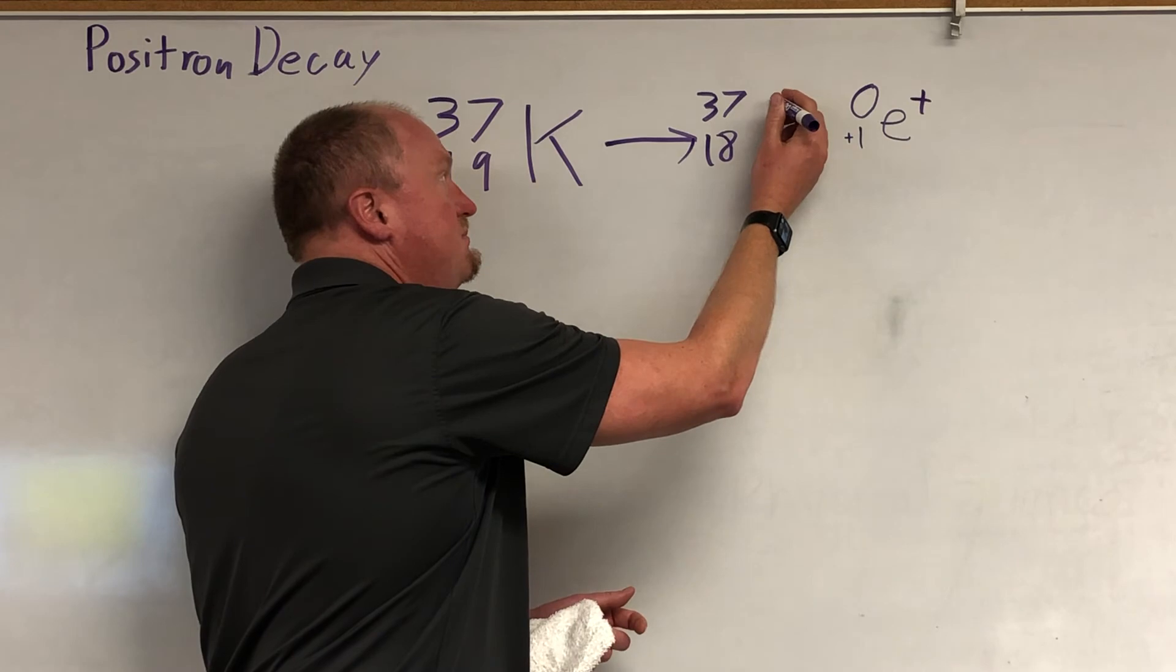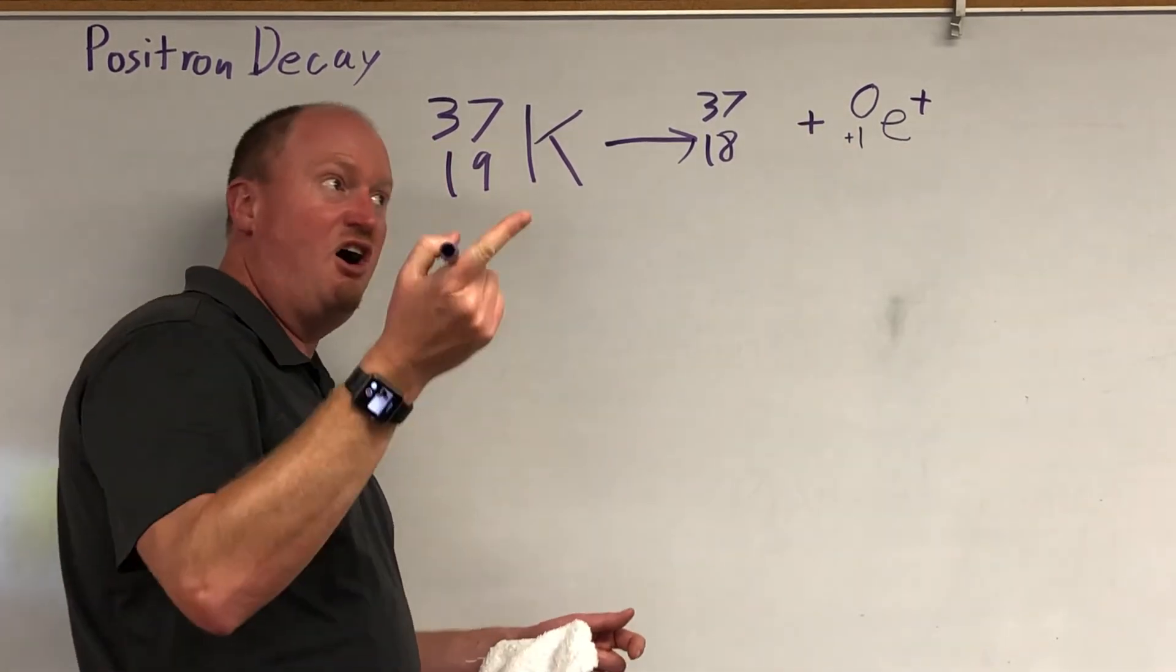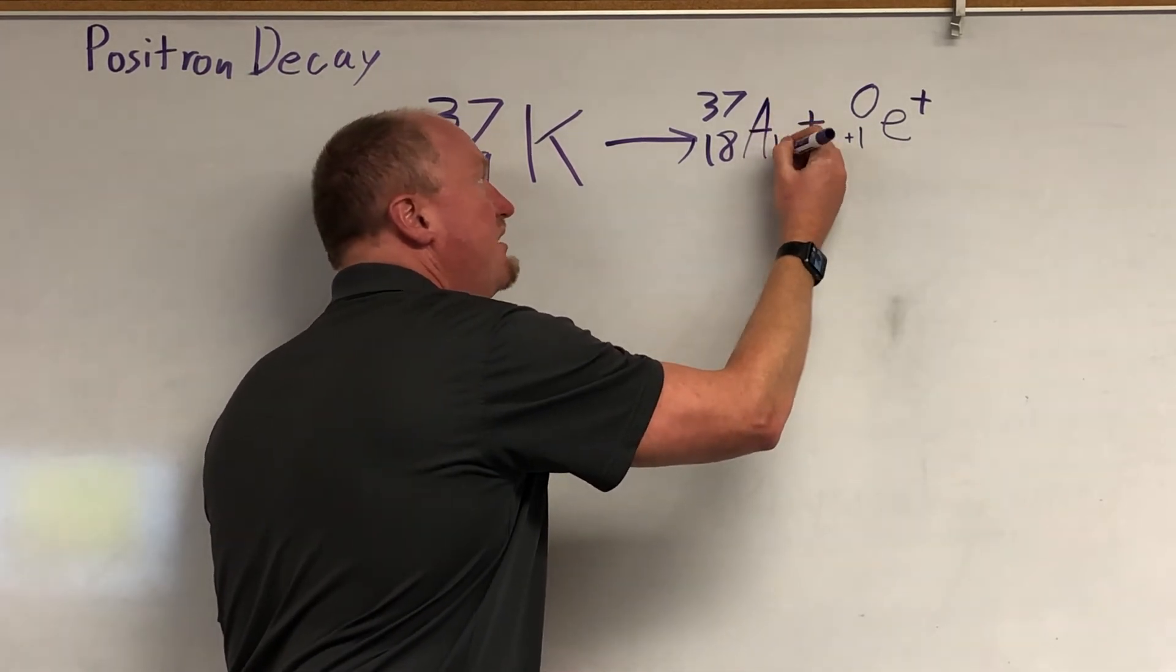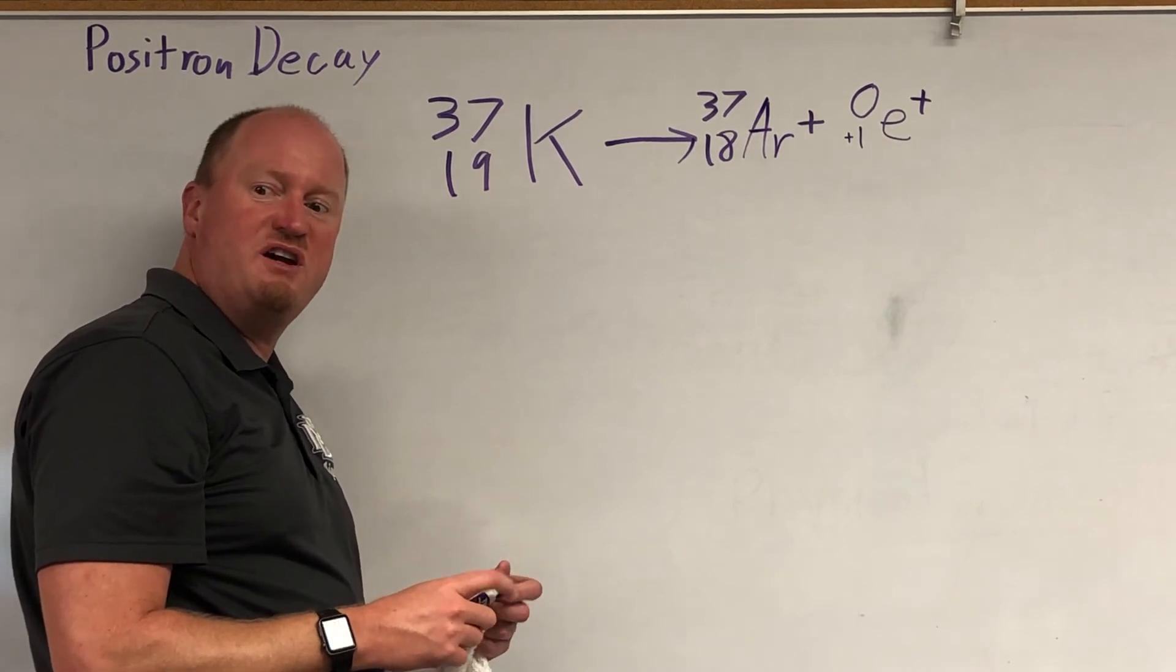And in this case with potassium, it's already on the far left side, so you have to go up one level and to the right. So it's going to be argon. That's where argon comes from.